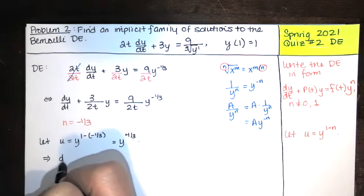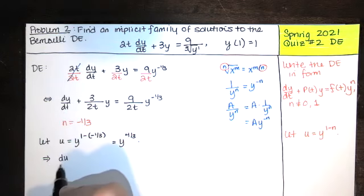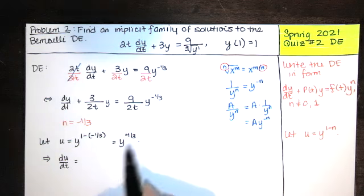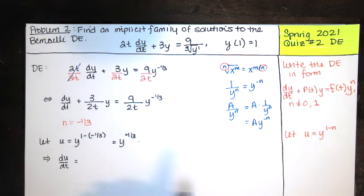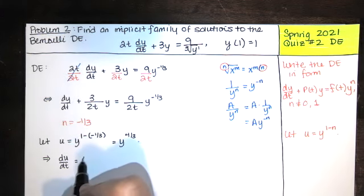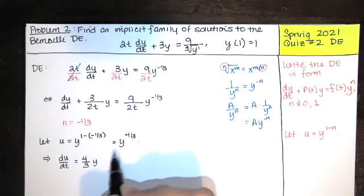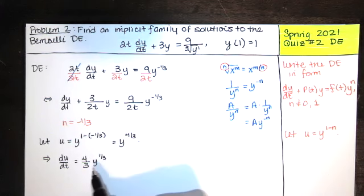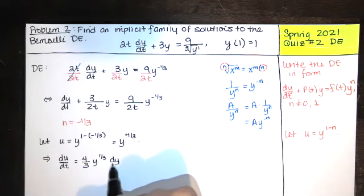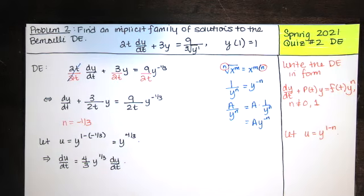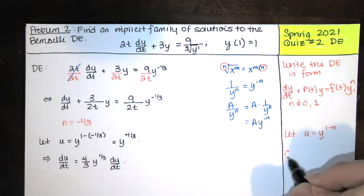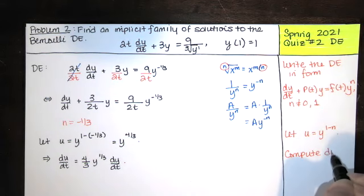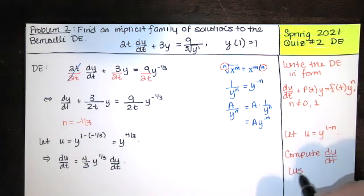Then we'll compute the derivative of u with respect to the independent variable t, remembering that y is a function of t. You can think of this as the chain rule or as implicit differentiation from calculus 1. The derivative of y to some power is that power times y to the one-less power — four-thirds minus one is going to be a positive one-third. But y is a function of t, so we multiply by the derivative of the inside, which is dy/dt. So we let u equal that and compute du/dt using the chain rule.